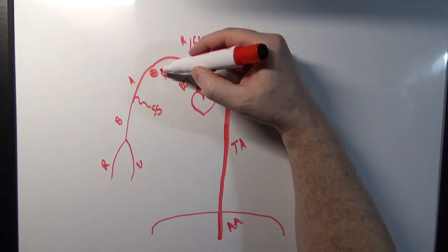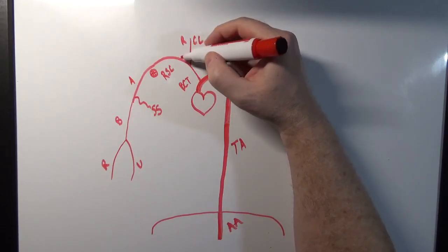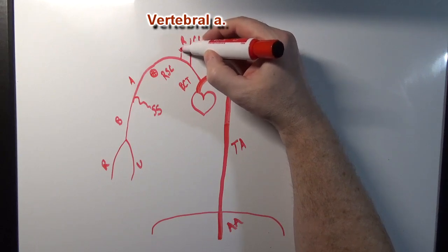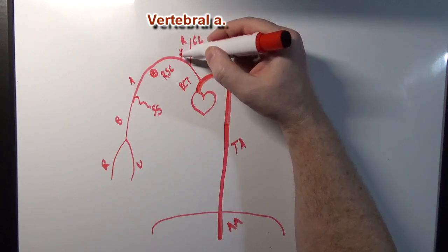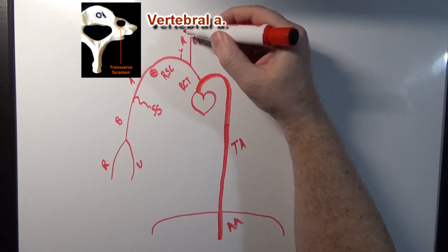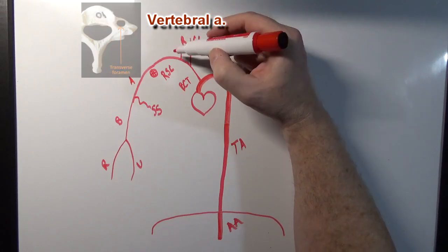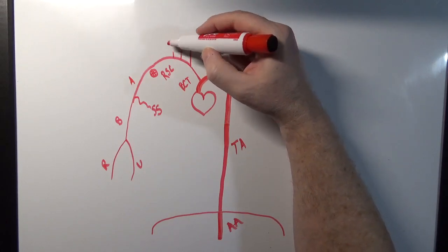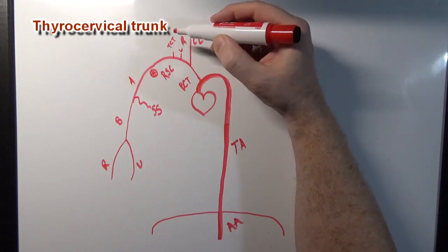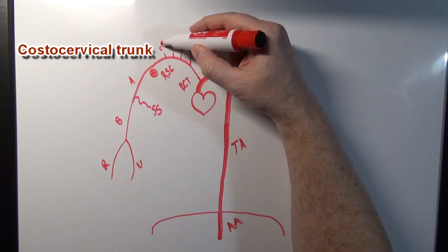Going back up to the right subclavian, let's talk about some of its branches. We're going to have a vertebral artery — remember, the vertebral arteries pass up through the transverse foramen in the cervical vertebra. We'll also have a thyrocervical trunk and a costocervical trunk.